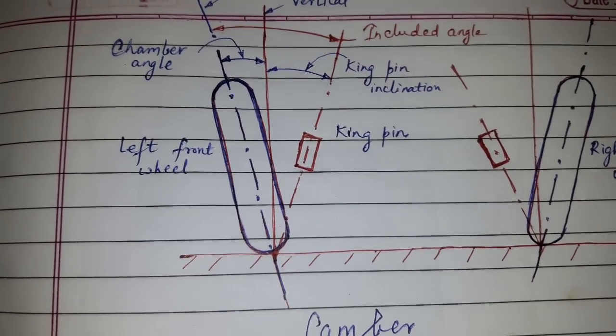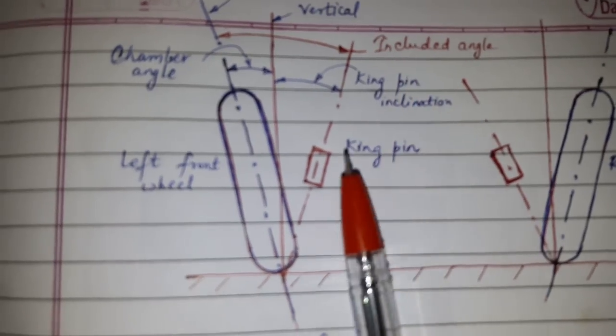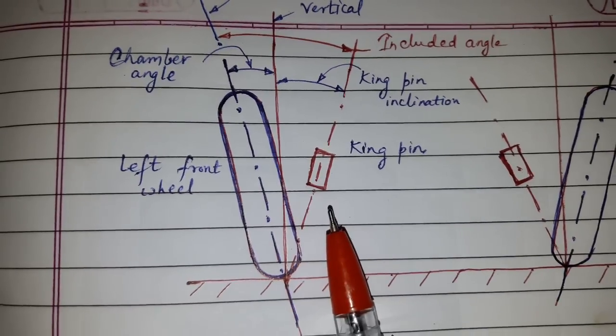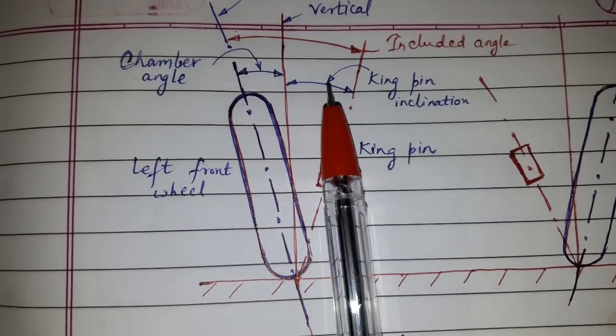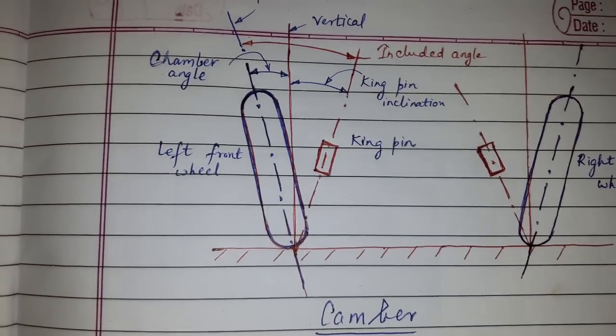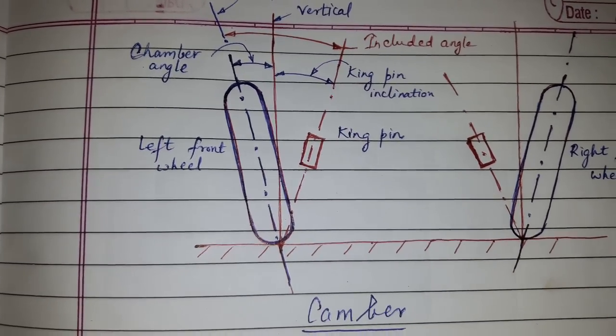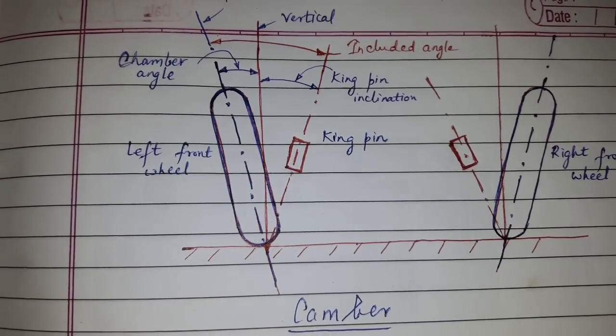And now regarding included angle: Included angle or combined angle is the sum of camber and the kingpin inclination. So this was regarding camber. Please like, comment, share, and subscribe. Thanks for watching.